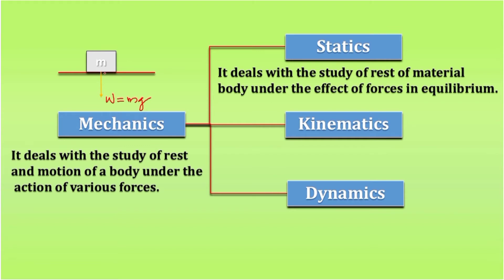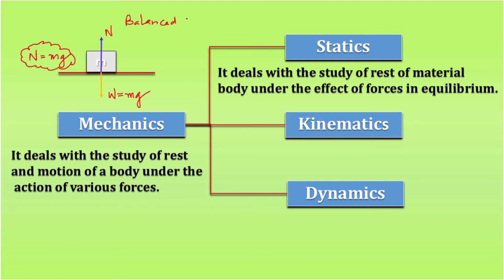At the same time, there is one more force exerted by the surface on the body. This force is equal and opposite to the gravitational force — its direction is upward and it is called the normal reaction, represented by N. Since the body is at rest, these two forces are equal and opposite, so we can write N = mg. We can call these forces balanced forces, or say they are in equilibrium — the net effect of the forces is zero, and the body is at rest.